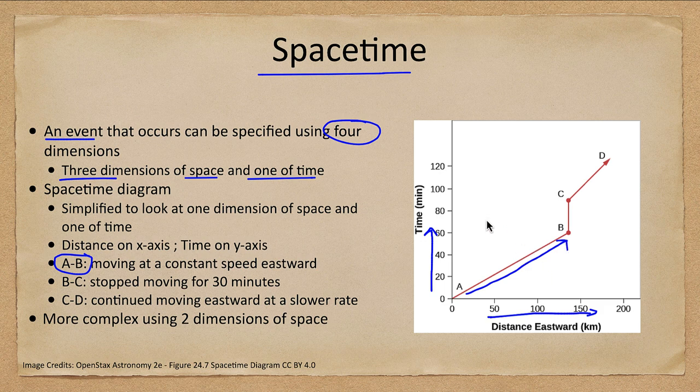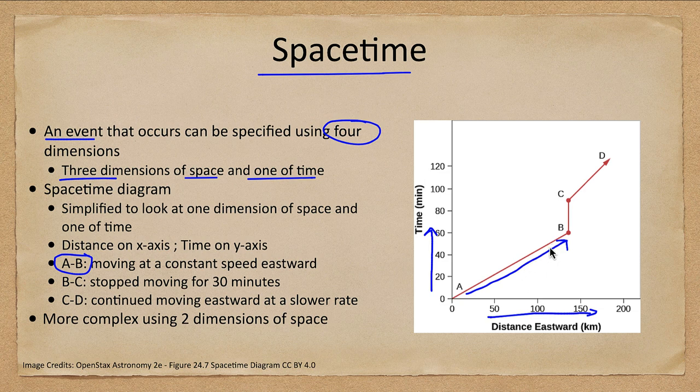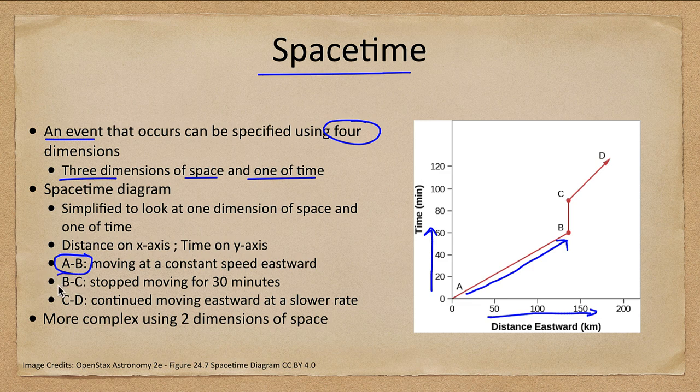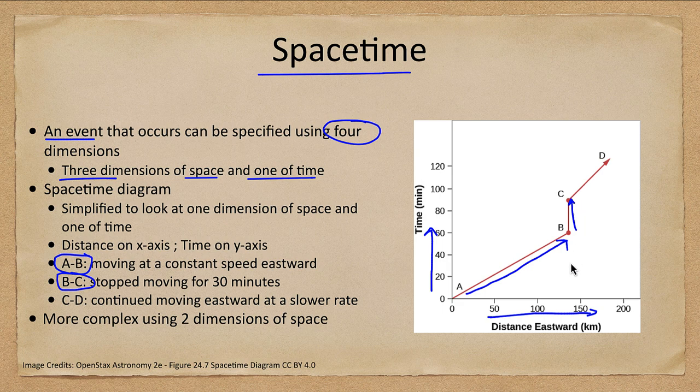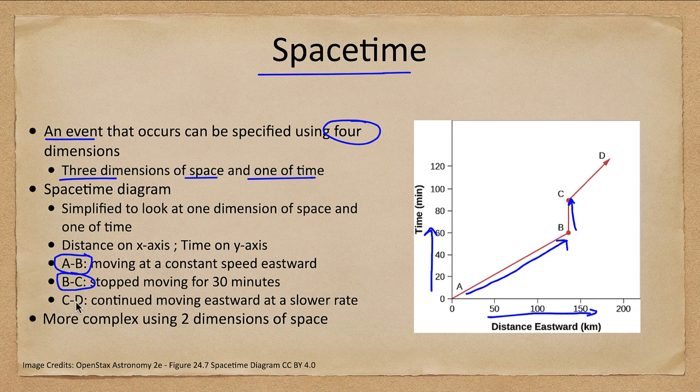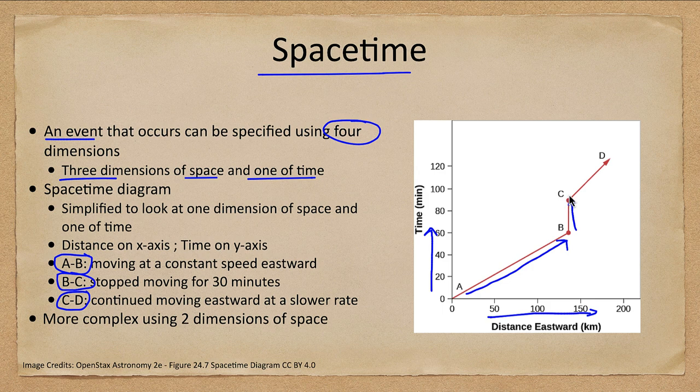The steeper that line is, the slower you're moving. The flatter that line is, the faster you're moving. And that means you could set a limit to how flat this line could be by the speed of light. Now between B and C, you stopped moving. You stayed at the same distance eastward, but time of course continues to go forward even while you're stopped. And between C and D, you went eastward, but now it's a steeper line, so you were going at a slower rate.